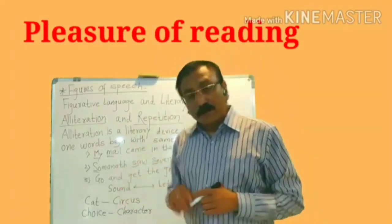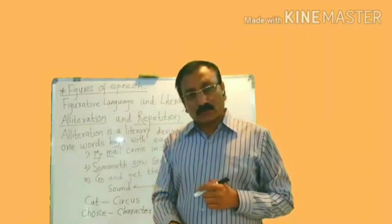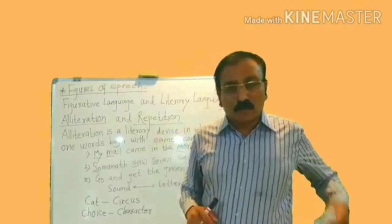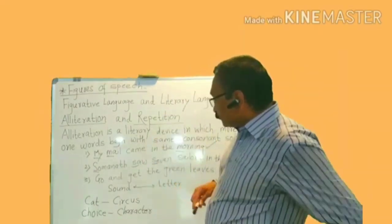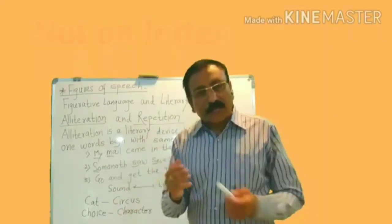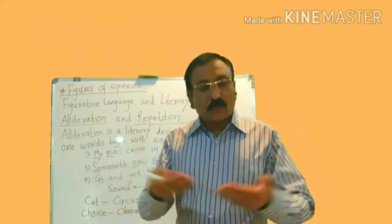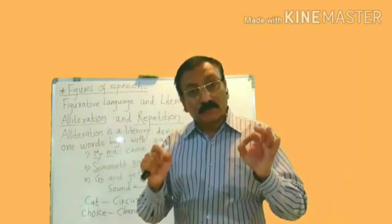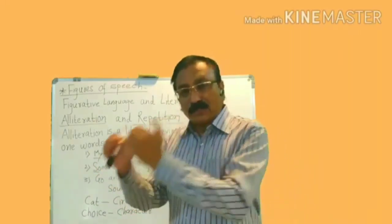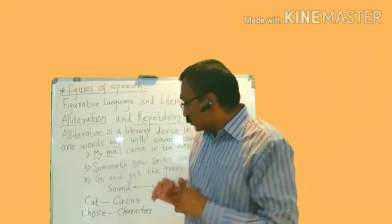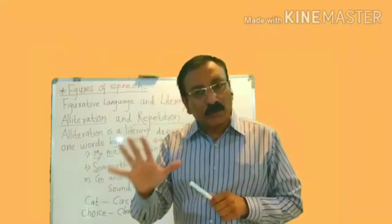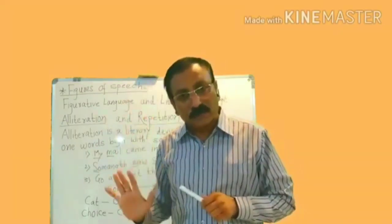Let me tell you one significant thing. When we try to point out whether there is alliteration in a particular line of a poem, we must keep one important thing in mind: alliteration is dependent on the sound, not on the letter. Many times it may happen that you have the same letters at the beginning of two words, and in that situation we may get confused whether it is an example of alliteration or not, because the same letter may produce different kinds of sounds.